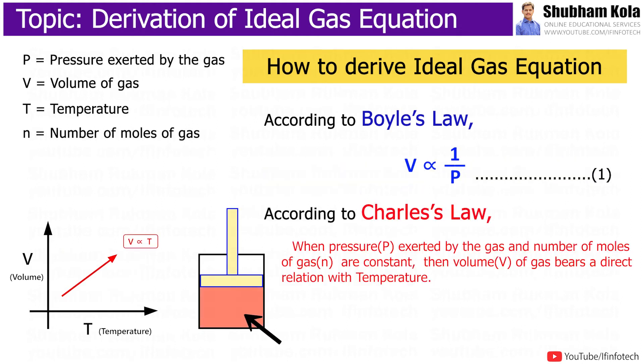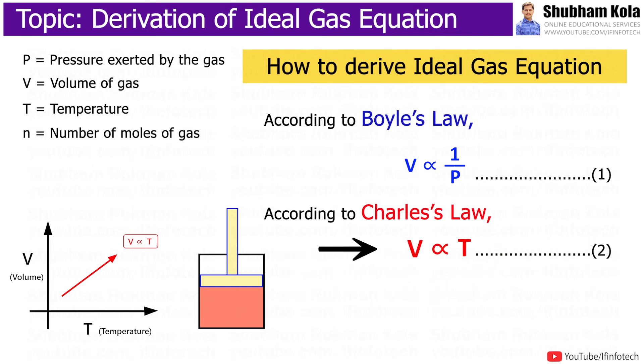And according to Charles's law, when pressure exerted by the gas and number of moles of gas are constant, then volume of gas bears a direct relation with temperature. That is, V is directly proportional to temperature T.